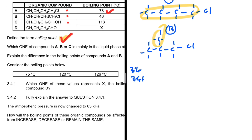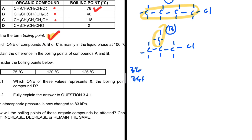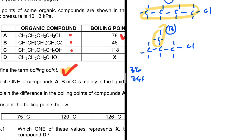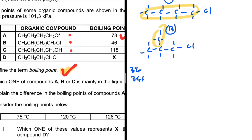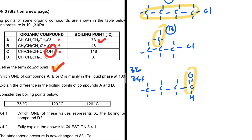For question 3.4.1, we consider three boiling point values — 75 degrees Celsius, 120 degrees Celsius, and 126 degrees Celsius — and must identify which represents X, the boiling point of compound D. Compound D appears to be an aldehyde, while compound C is an alcohol. The boiling point of compound D must be lower than that of C, because aldehydes have dipole-dipole interactions while alcohols have hydrogen bonding, which is stronger.